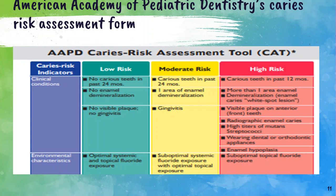When there is caries occurrence in at least the past 24 months, and there is an area of enamel demineralization and presence of gingivitis, the patient comes under moderate risk. High caries incidence in the past 12 months, more than one area of enamel demineralization, visible plaque on anterior teeth, and radiographic enamel caries determine high risk patients.